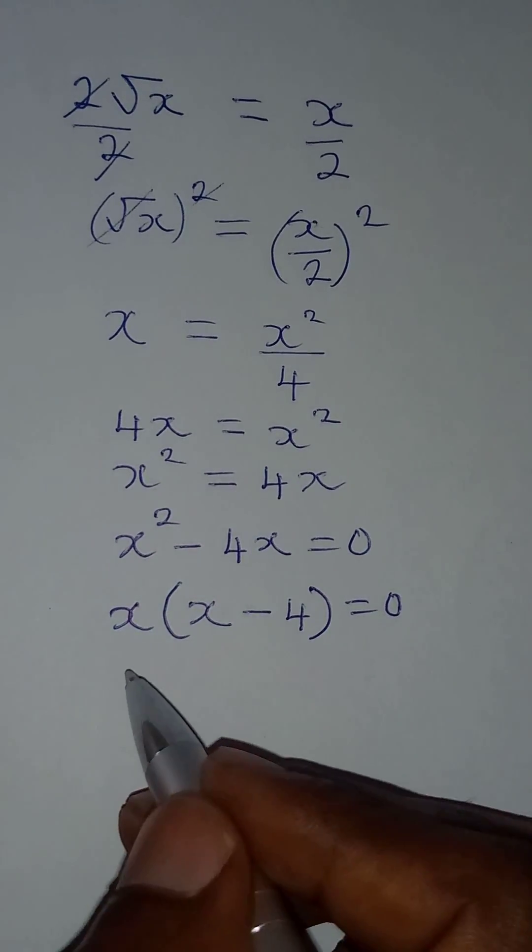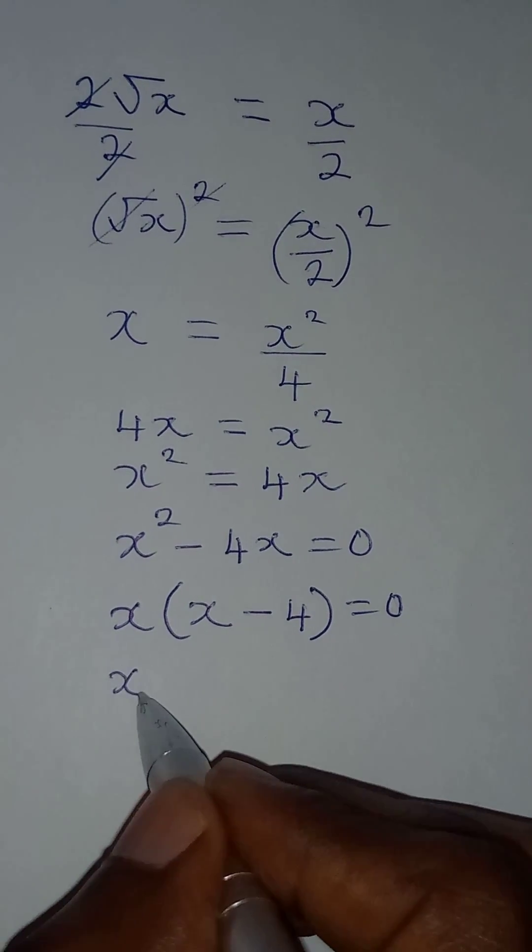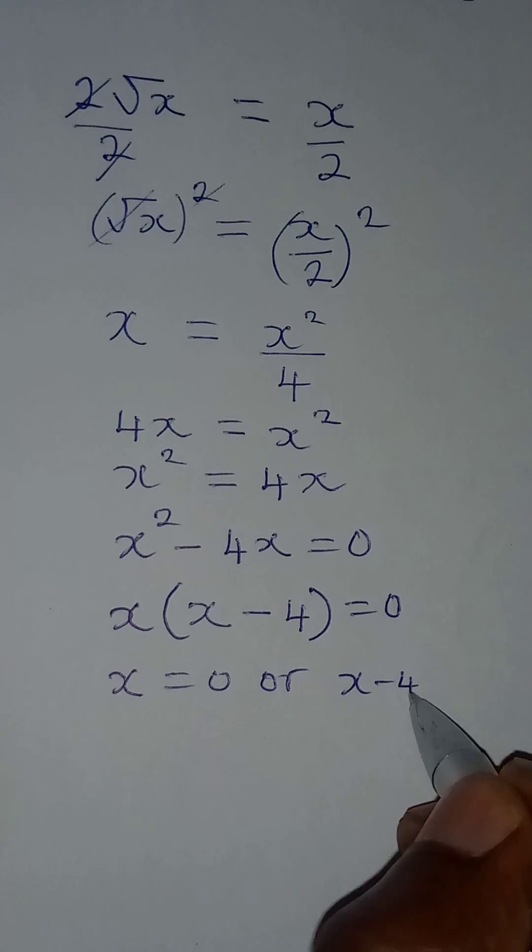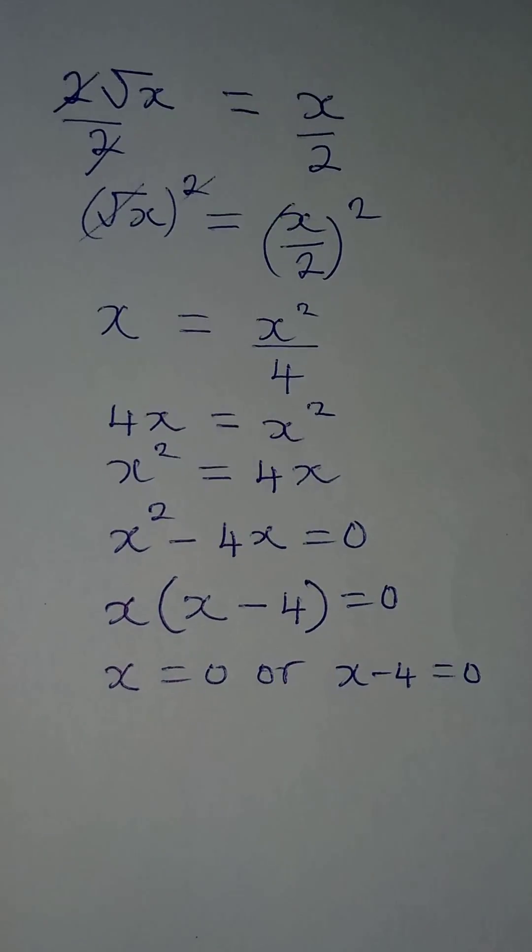Then we are going to use zero product rule. Meaning that it is either x is equal to zero or x minus 4 is equal to zero.